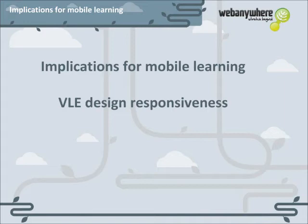What the research from Google seems to indicate is that smartphones are often used for social networking as well as the starting point for a lot of search, which is then often carried over onto a PC, while tablets seem to be used more for media consumption like videos and websites.